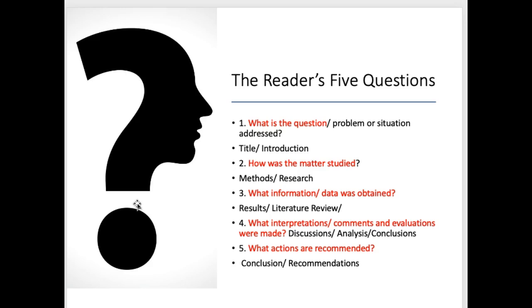In any piece of academic writing, readers have five important questions. Number one: what is the question? Explain why you're writing — every piece of writing needs a purpose, and one of the things you'll establish immediately in the introduction is why you are writing and what the reader will get out of it. You'll also explain how the matter has been studied: have you approached it through a literature review, by reading things, or have you done some primary research? Then you address what information or data was obtained, and that will bleed into how you got it. This is by far the most important element: what interpretations, comments, and evaluations are made.